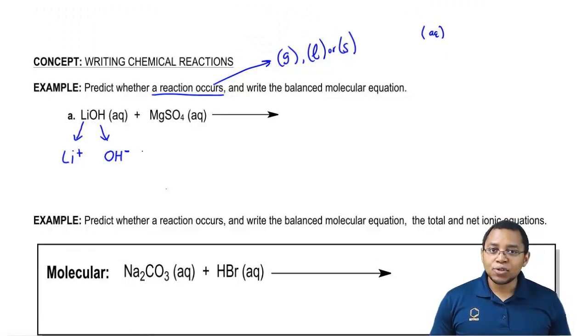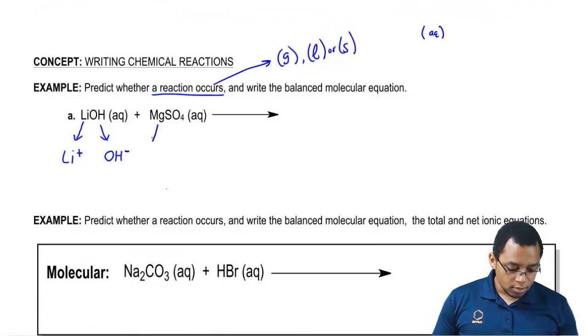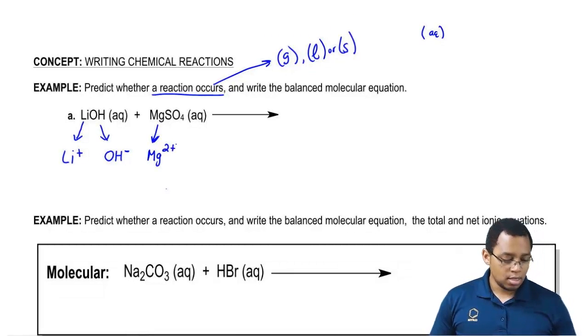For magnesium sulfate, remember the rules for sulfates. Sulfates are soluble here. They're only insoluble when they're with certain types of elements. So here this is going to break up into Mg2+ and then sulfate, sulfate here is going to be SO4 2-. Remember it's essential you guys remember your polyatomic ions.